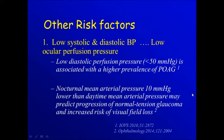Other risk factors include low systolic and diastolic blood pressure that will result in low ocular perfusion pressure. It was found that low diastolic perfusion pressure less than 40 millimeters mercury is associated with higher prevalence of primary open-angle glaucoma.